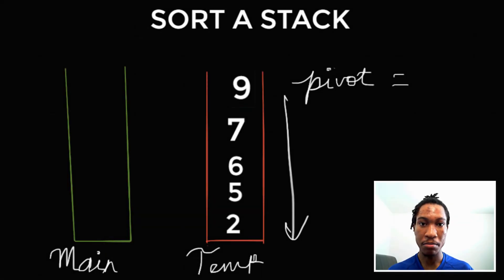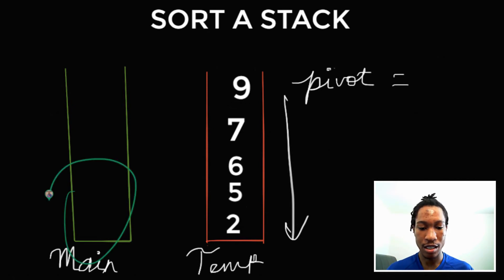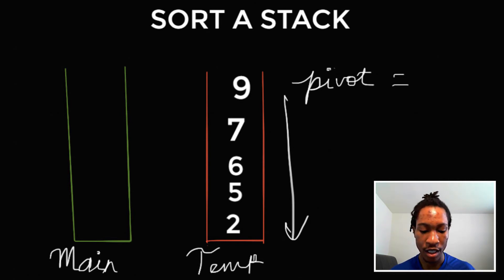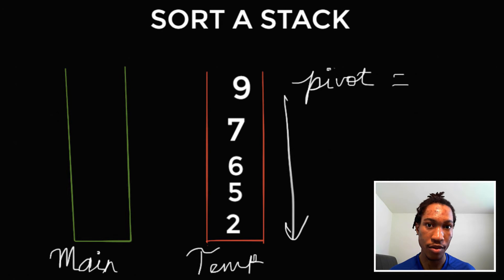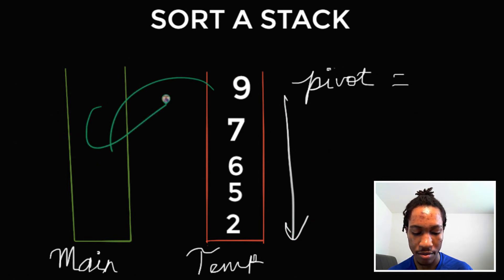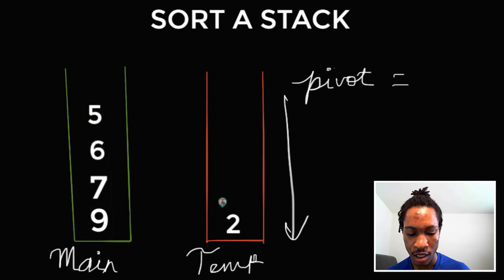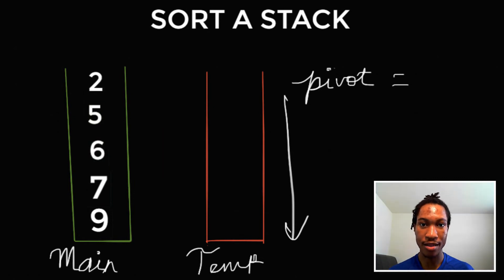At this point we're done with the algorithm. The algorithm only knows to stop when there are no more elements in main, so it checks — are there any other elements in main? No. Now the only thing left to do is to push the elements back into main from temp. They're going to be in their rightful sorted order. Looking from a top-down perspective, they're sorted in descending order, so we push them back into main — we get 9, 7, 6, 5, and 2 — and now we've successfully sorted the stack in ascending order.